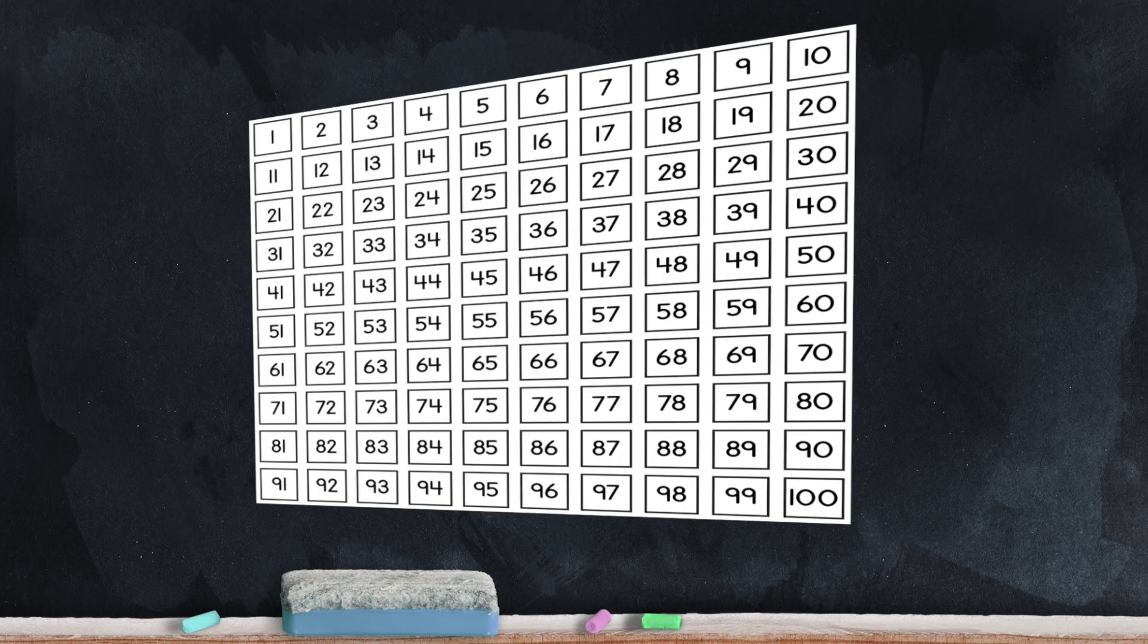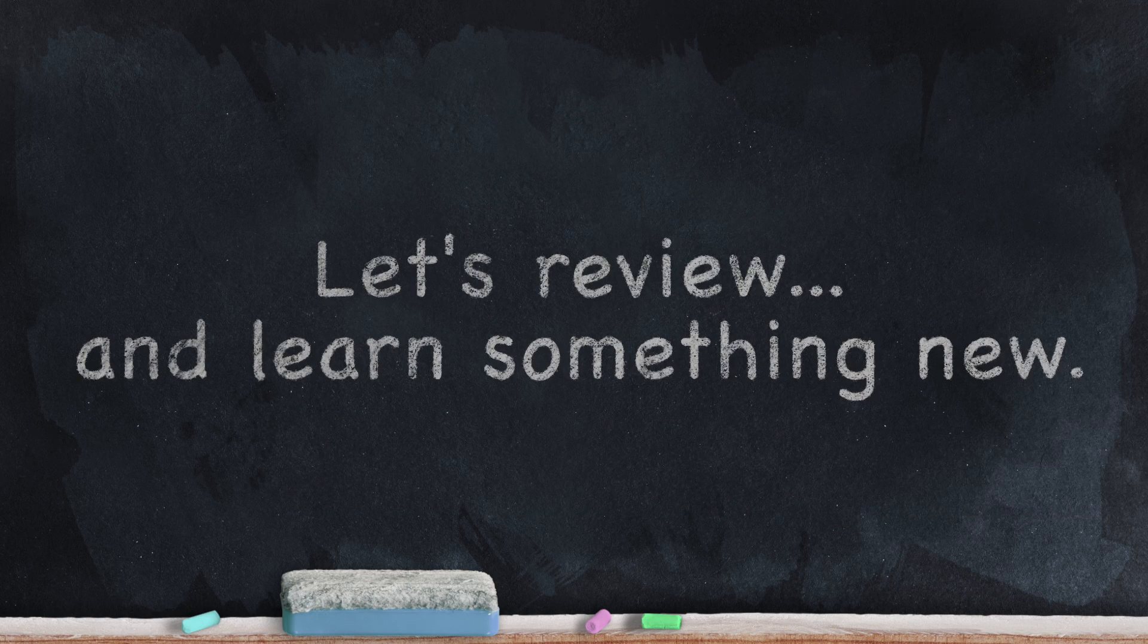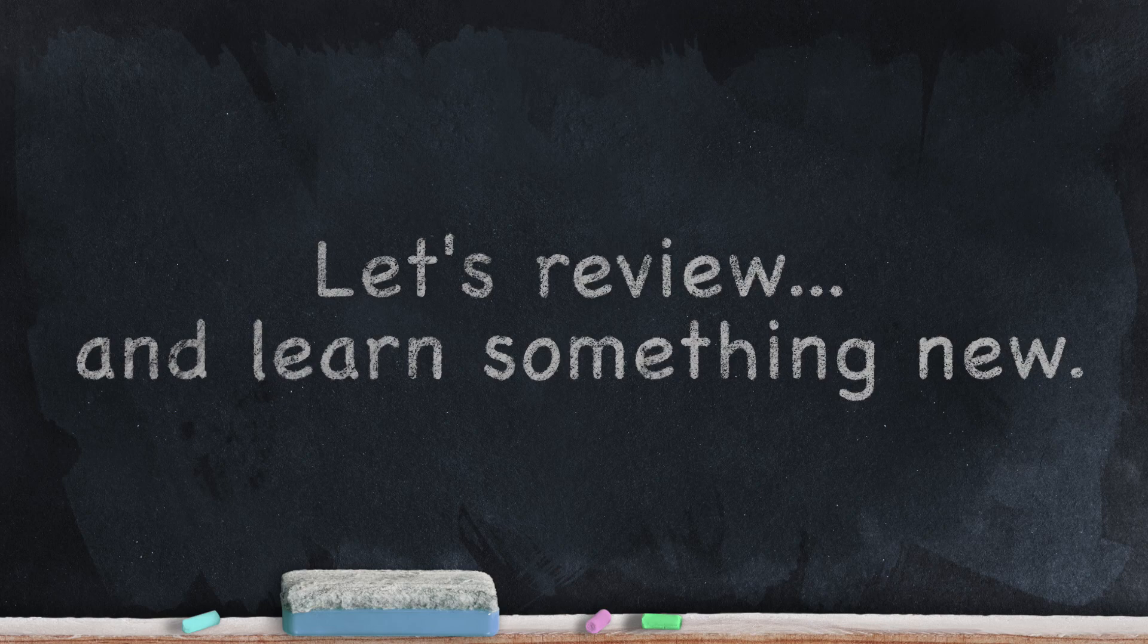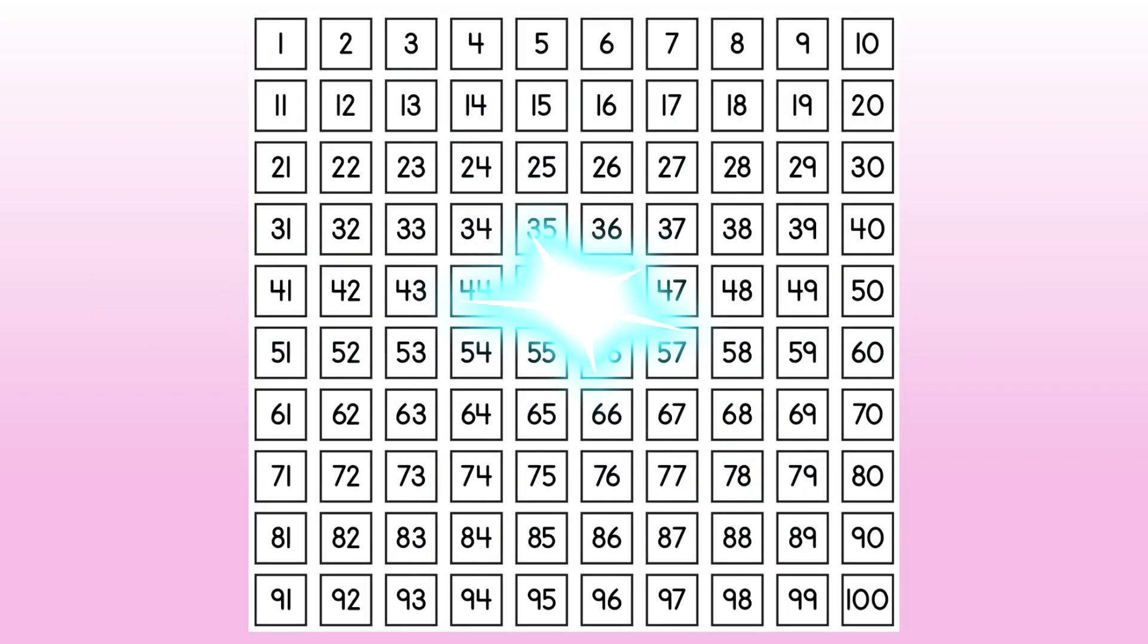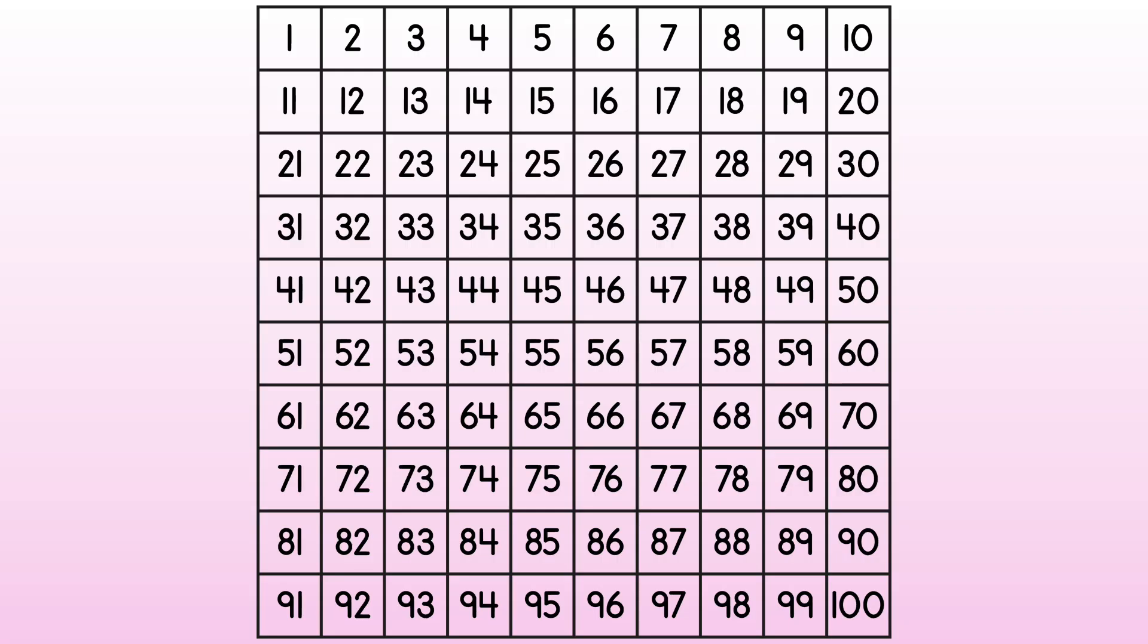Let's review what a hundreds chart is and how it helps us to subtract from numbers up to 100. What does a hundreds chart look like? It's a box, and the box is divided into 100 little boxes numbered 1 through 100. Each row is a 10. We can use the hundreds chart to subtract from any number up to 100.